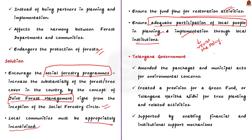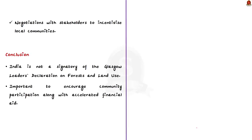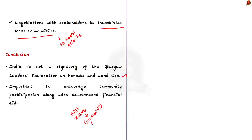As an example to other states, the Telangana government amended the Panchayati and Municipal Act for environmental concern. They created a provision for a Green Fund or Telangana Harita Nidhi. This fund is for tree planting and related activities and should be supported by enabling financial and institutional support. The main focus is to incentivize local communities to boost efforts to conserve and develop forest resources. It is to be noted that India is not a signatory of the Glasgow Leaders' Declaration on Forest and Land Use.